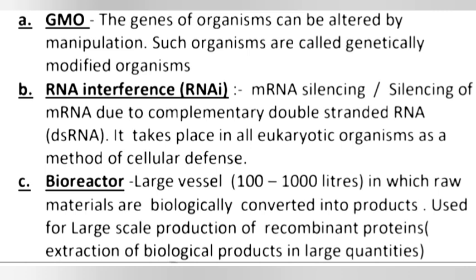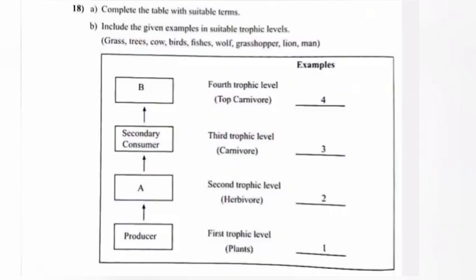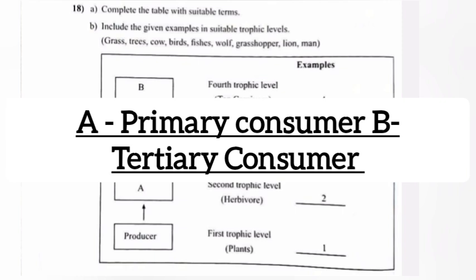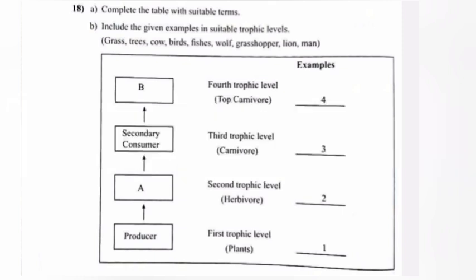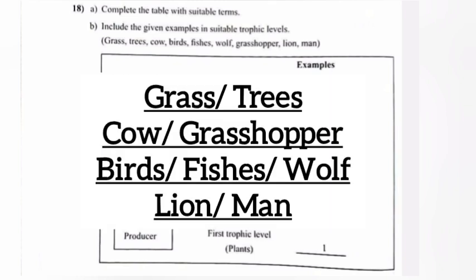Bioreactors: Large vessels in which raw materials are biologically converted into products, used for large-scale production of recombinant proteins. Question 18: (a) Complete the table with suitable terms — answers: (a) primary consumer, (b) tertiary. (b) Include the given examples in suitable trophic levels: 1. Grass or trees, 2. Cow or grasshopper, 3. Birds, fish, or wolf, 4. Lion or man.